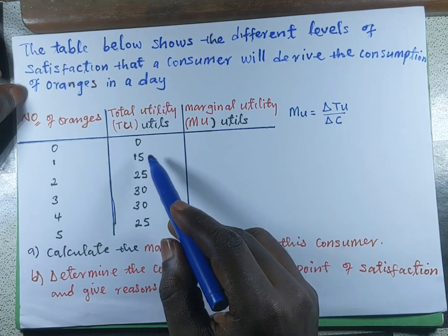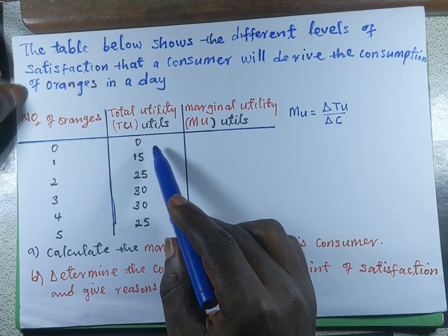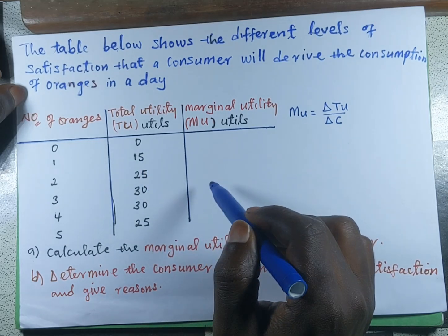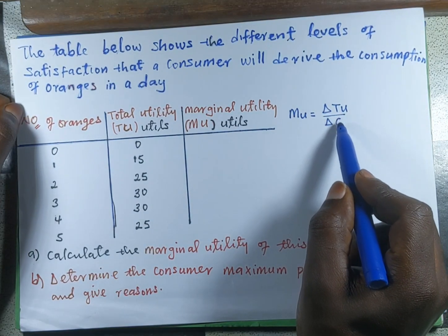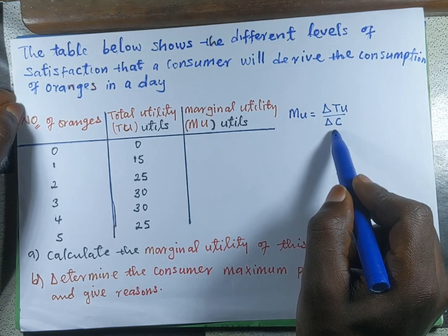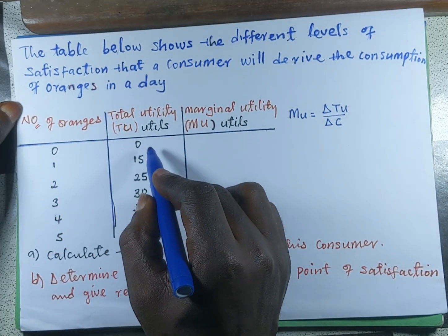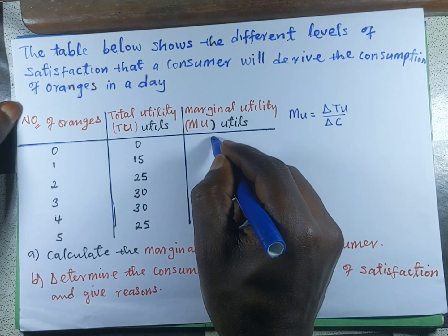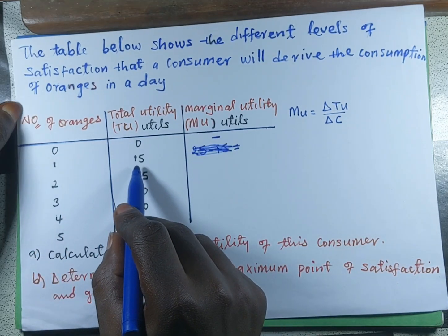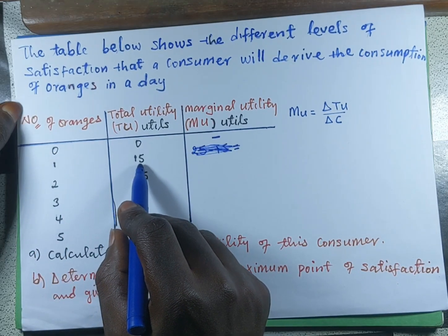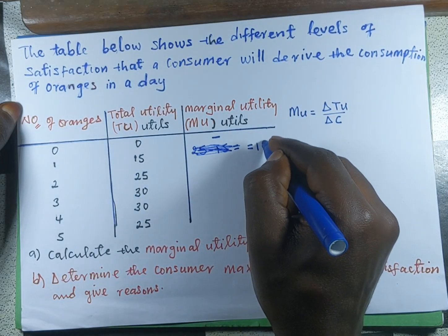Since total utility is given, we are going to look for marginal utility, which is equal to change in total utility over change in consumption. Since no unit was consumed at zero, there was no total utility, so we can put zero there. For the first orange, the marginal utility will take the first total utility, which is equal to 15.